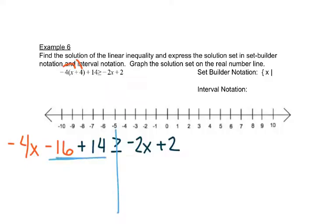So we're going to combine our like terms here. So we have negative 4x minus 2 is greater than or equal to negative 2x plus 2.